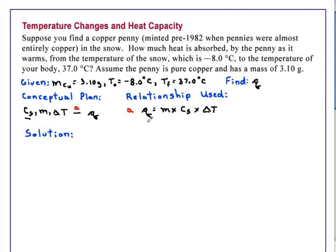We need to look up the value of the heat capacity of copper, and we find that it is 0.385 joules per gram degrees C.